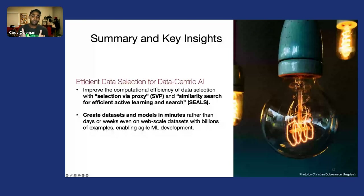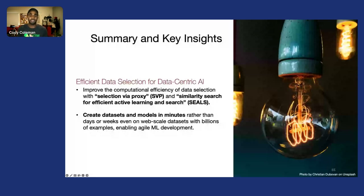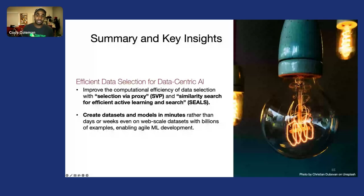Basically, by improving the computational efficiency of data selection with methods like Selection by Proxy and SEALS, we can create datasets and models in minutes rather than days or weeks, even on web-scale datasets with billions of examples, enabling agile ML development and allowing humans and machines to work together more efficiently.